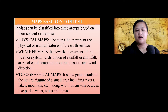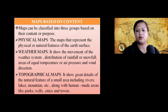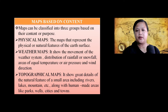Next is weather maps. Weather maps show the movement of weather systems, distribution of rainfall or snowfall, areas of equal temperatures or air pressures, and also wind directions.